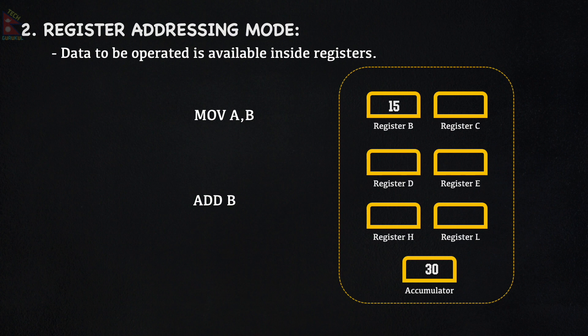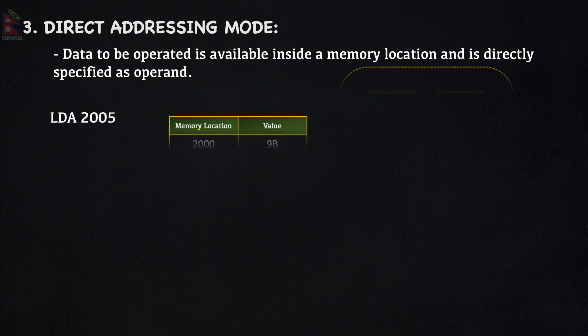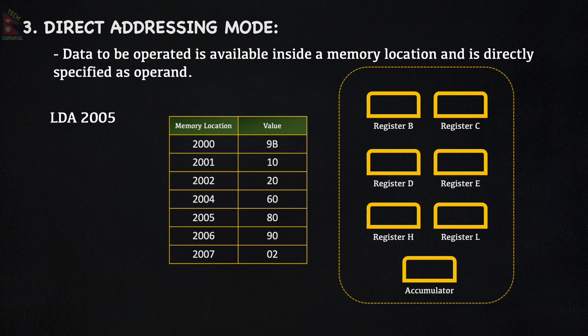The next mode is Direct Addressing Mode. In this mode, the data to be operated on is available inside a memory location and is directly specified as the operand. For example, LDA 2005 — here the address 2005 is directly specified as the operand, and the data at that memory location is loaded into the accumulator.